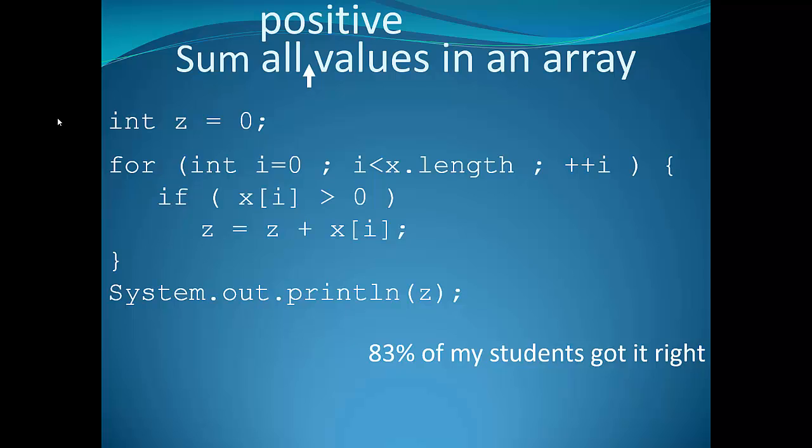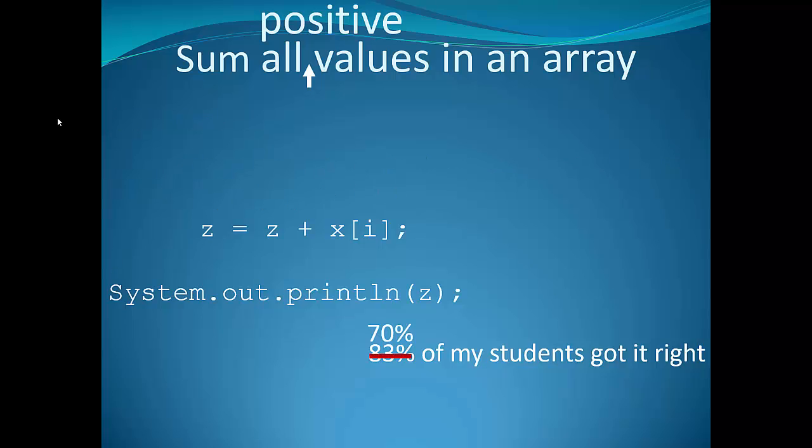How can a student read all those lines and answer correctly that it sums all the values, and then somehow ignore that one line of code? Eventually I realized that I was framing the question in my mind the wrong way. When answering that question, 13% of the students were not reading all the code. What I think was going on is 13% of my students were only really reading two lines of code. Those two.